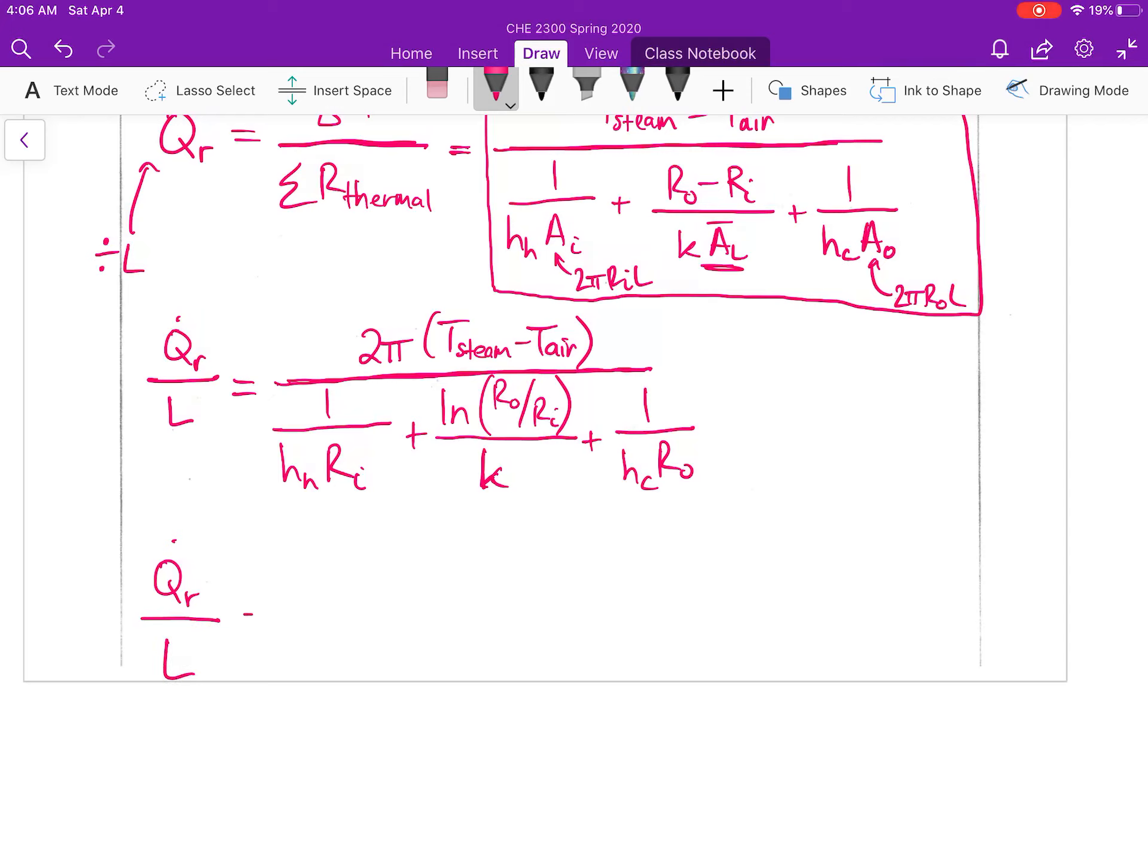Our heat flow per length of pipe is going to be equal to 2π times the temperature of our steam, 220 degrees Fahrenheit, minus the temperature of our air, 70 degrees Fahrenheit.